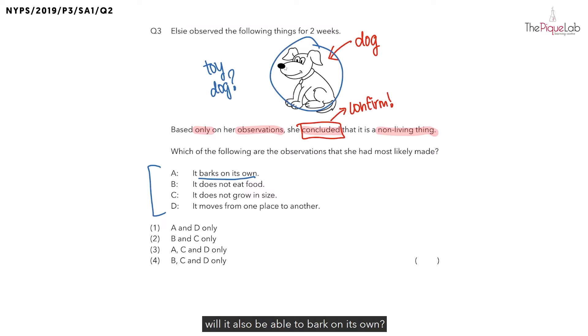If this is a toy dog, will it also be able to bark on its own? Yes, it would be, correct? When you switch the toy dog on, the toy dog will be able to move and also will be able to bark on its own as well. So would Elsie be able to use this observation to determine that this is a non-living thing? She would not be able to do so because a toy dog would also be able to bark on its own.